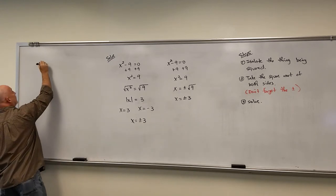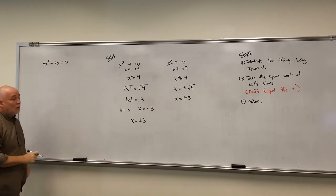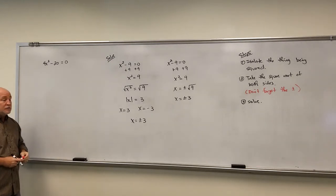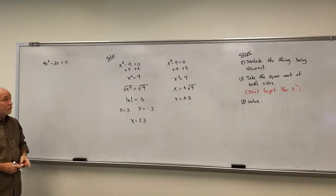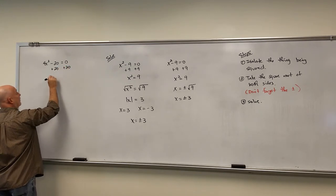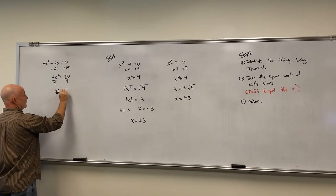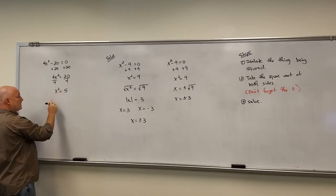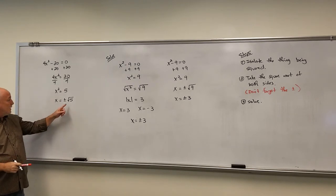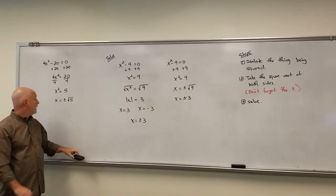Let's try 4x² − 20 = 0. This is a quadratic equation — a polynomial where the highest power is 2. We can extract the root since we have something squared and everything else is numbers. Step 1: isolate x², so we get 4x² = 20, then divide both sides by 4 to get x² = 5. Step 2: take the square root of both sides — don't forget plus or minus — giving x = ±√5. We can't simplify √5 further, so that's our answer.